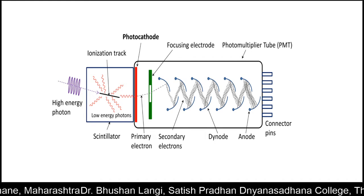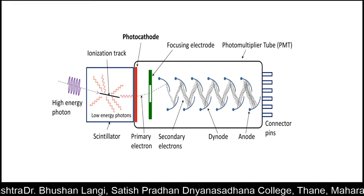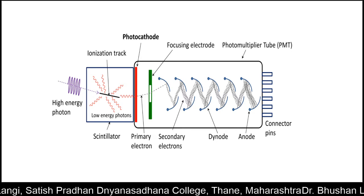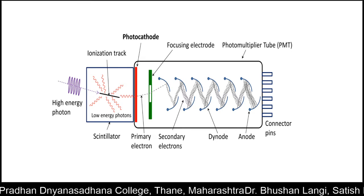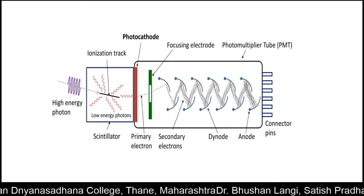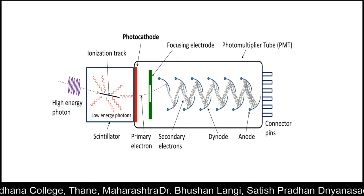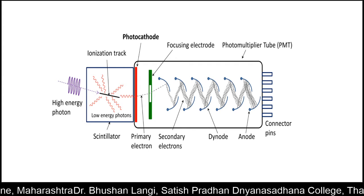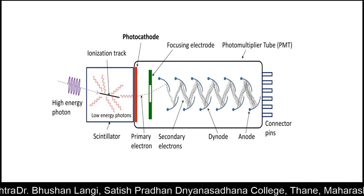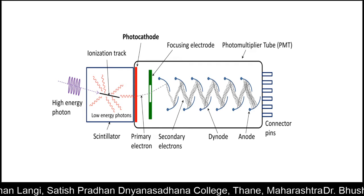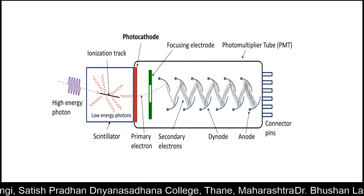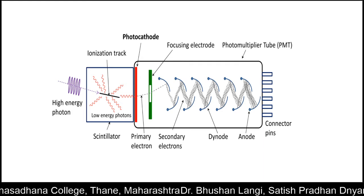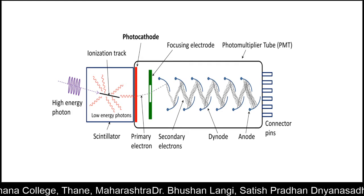The photomultiplier tube has a series of electrodes known as dynodes. This series of electrodes is arranged with increasing potential. When a primary electron is incident on the first electrode, that one electron produces 10 secondary electrons.